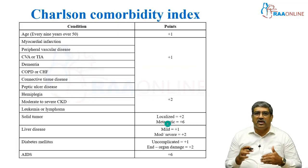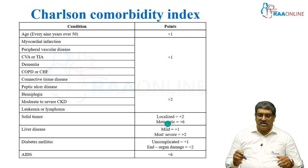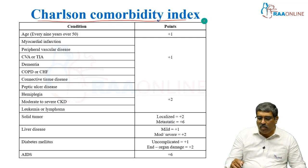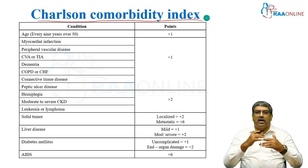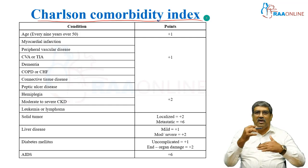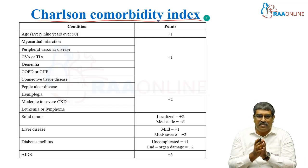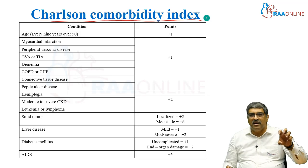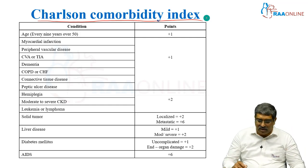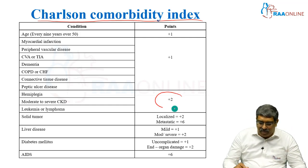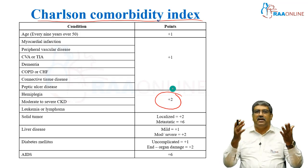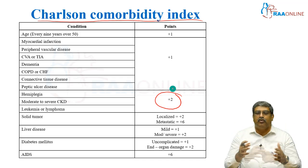Another important thing to look at in the elderly patient is the Charlson Comorbidity Index, where you look at 12 variables — various comorbidities which can be present — and weightage is given to certain diseases. For example, hemiplegia, kidney disease, leukemia, or lymphoma are given 2 points.